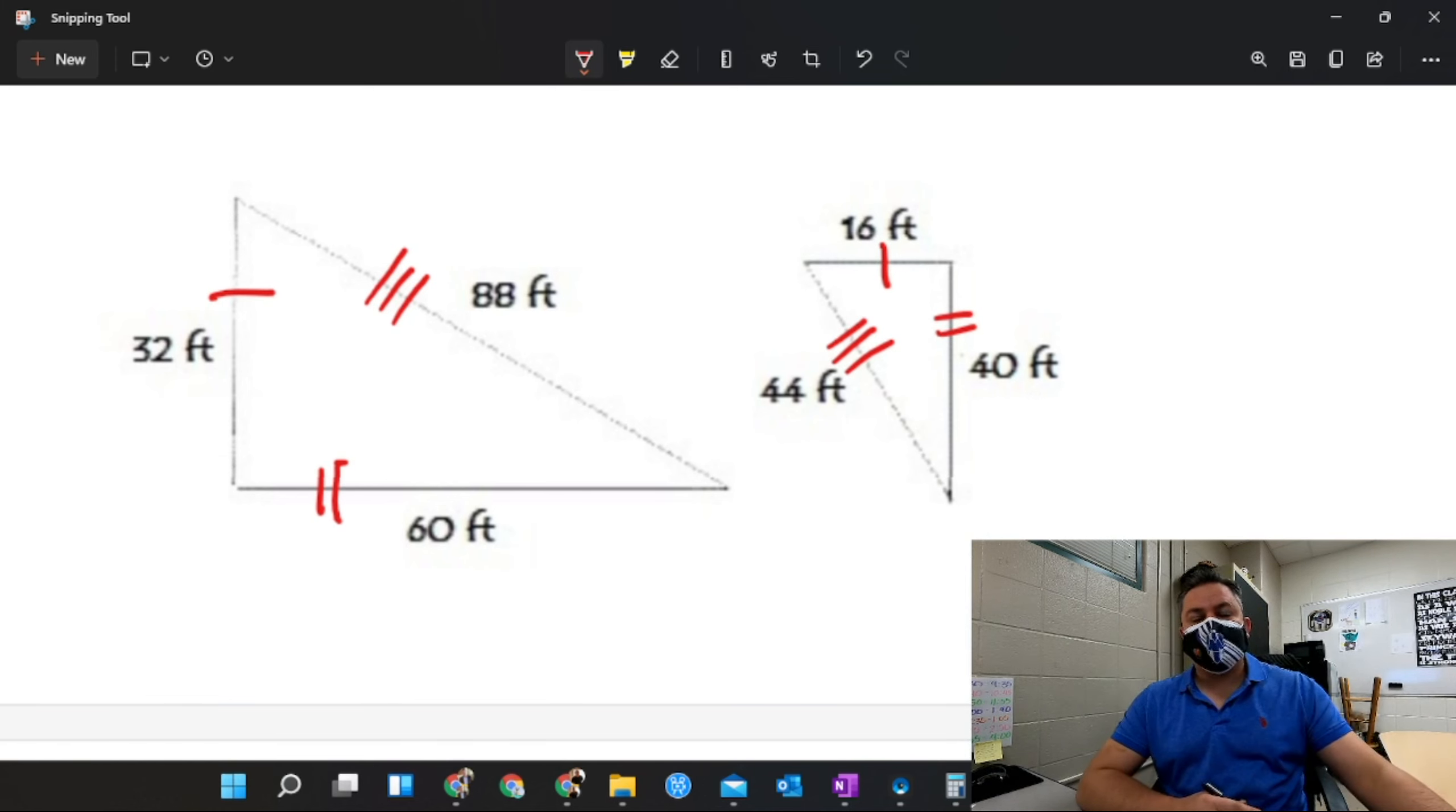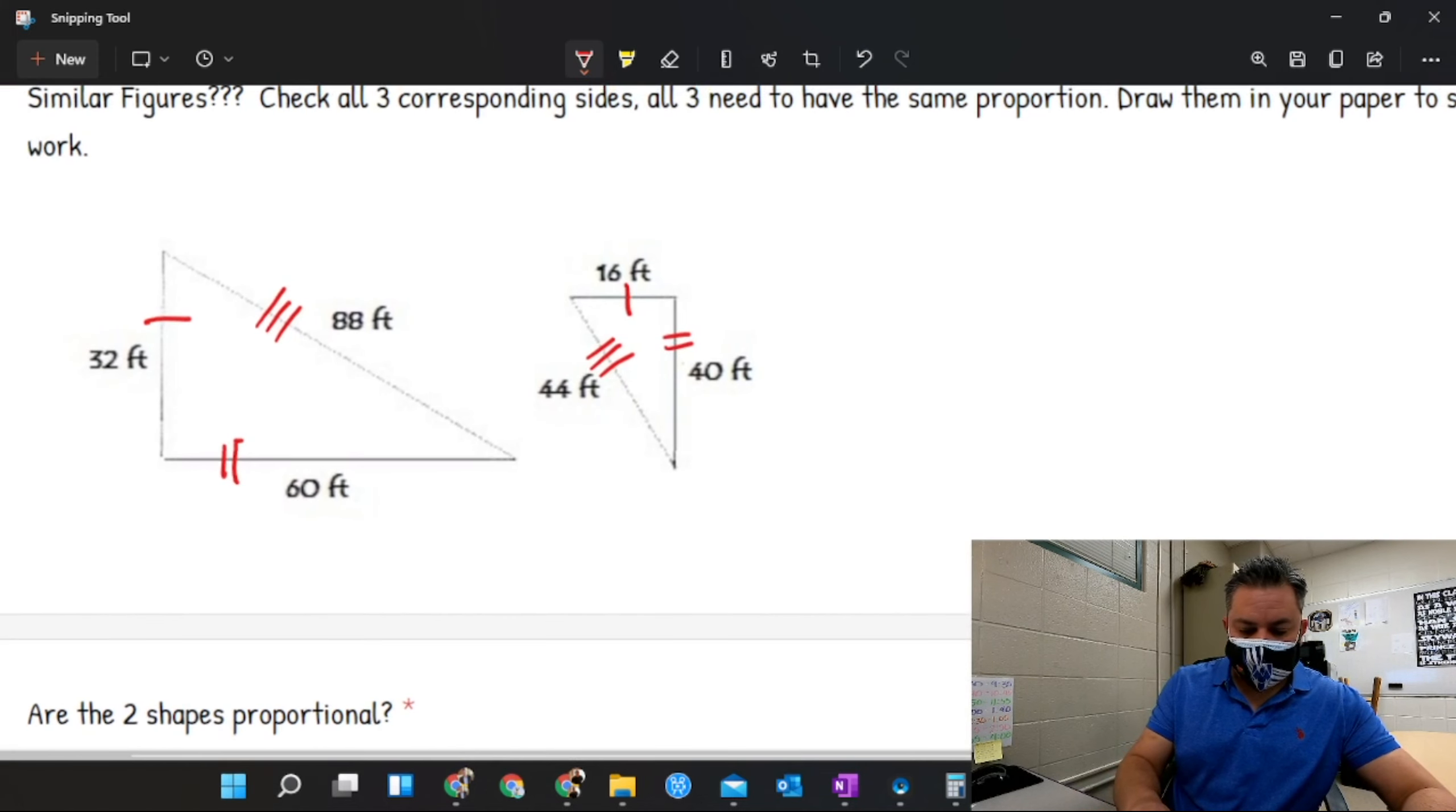So the way to find proportionality right here, we can do it in different ways. One way is to do proportions. For example, we have a big one over a small one.